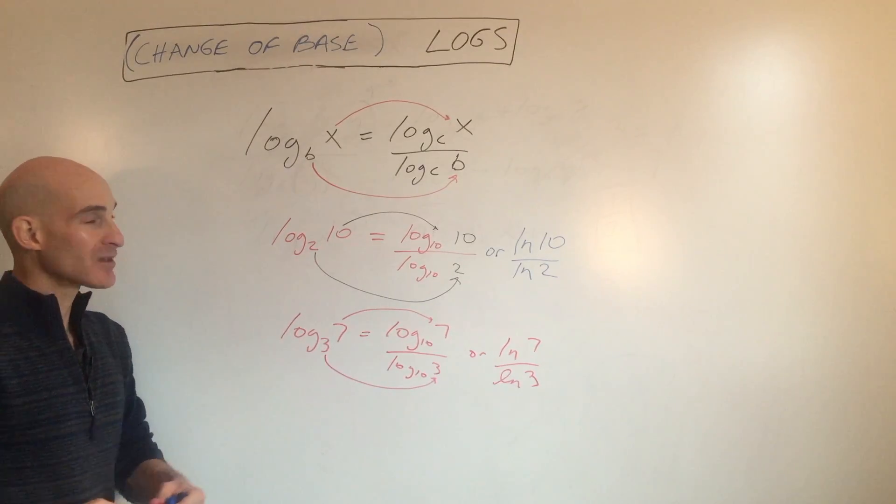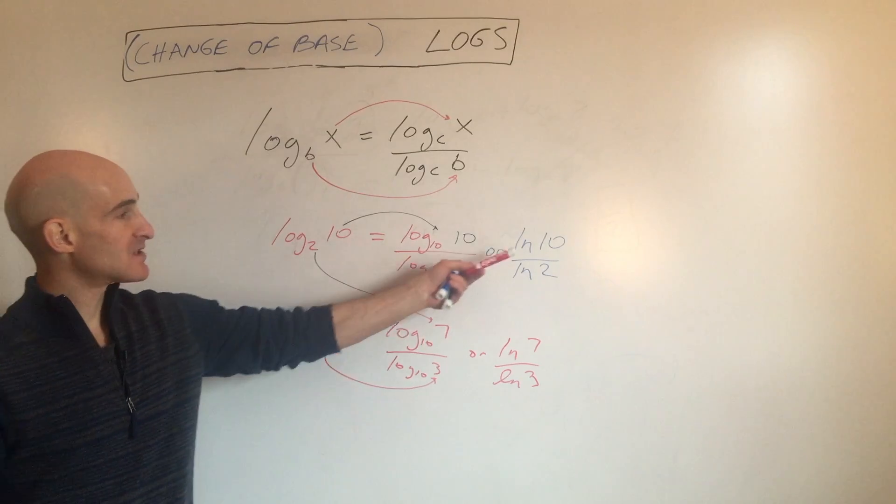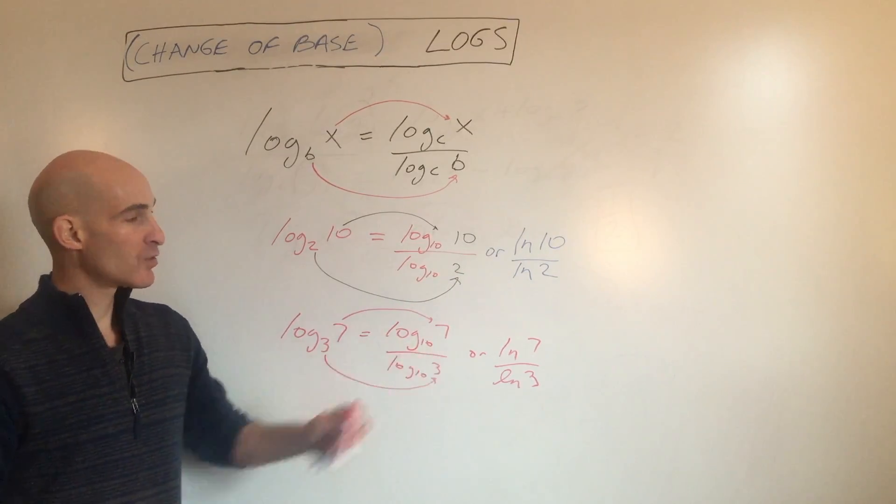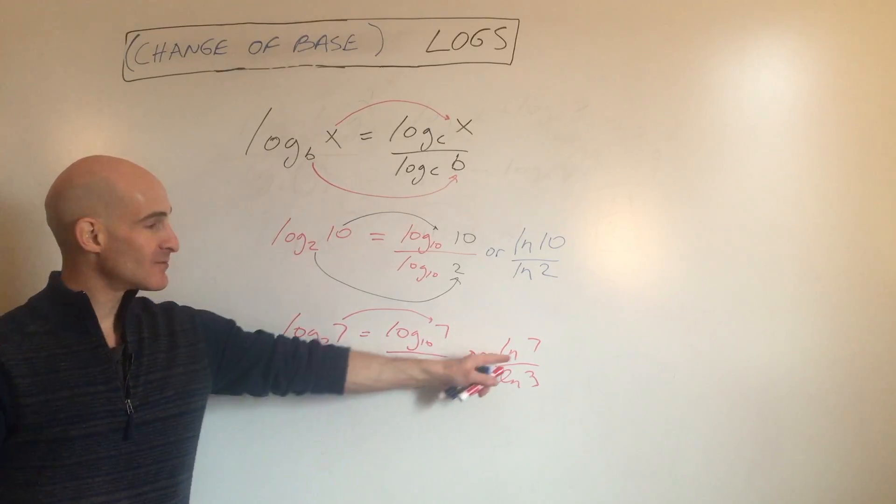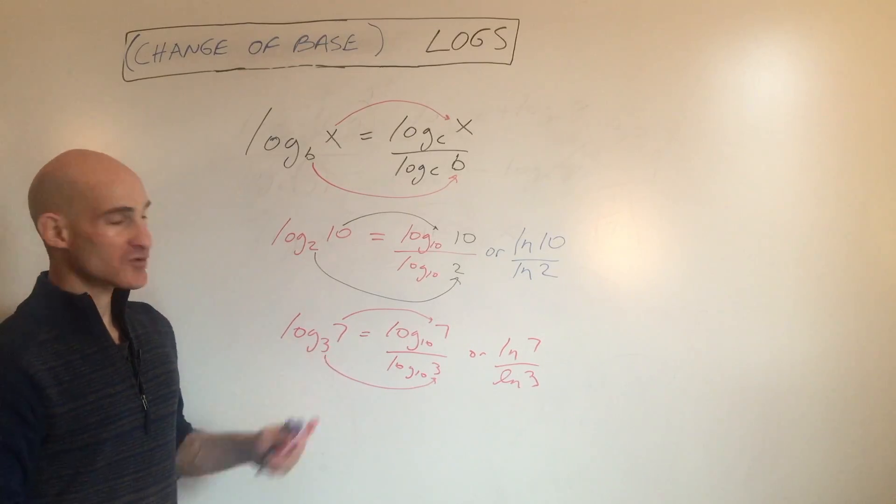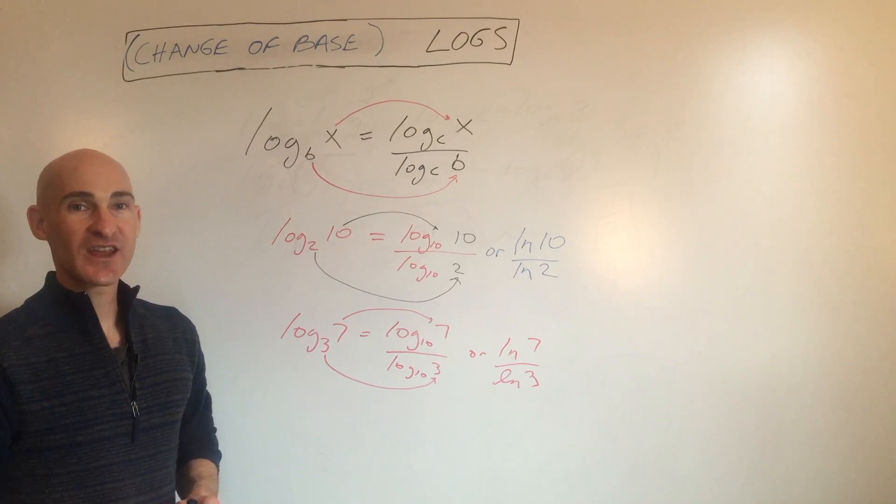It's just that some calculators don't have the capacity to change the base. They're restricted to natural log and log base 10. So if you have a calculator like this, it's a quick way to figure out approximately what the answer is. You can round it to get an approximate answer. I'll see you in the next video.